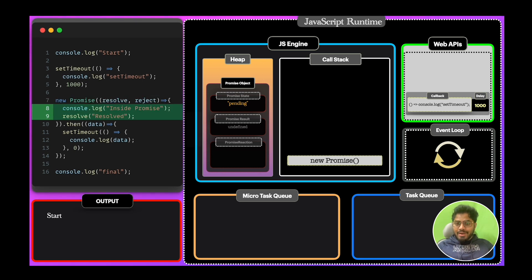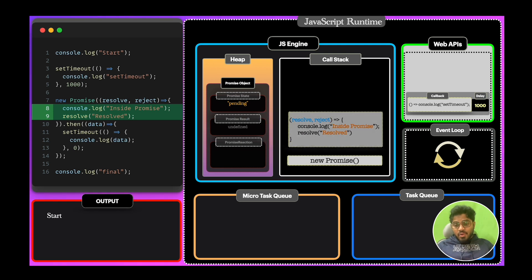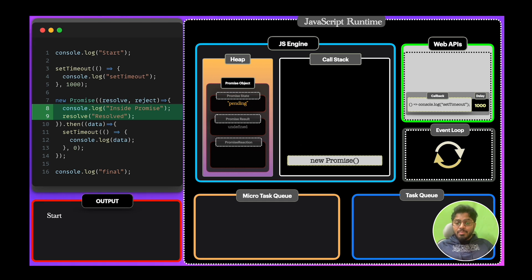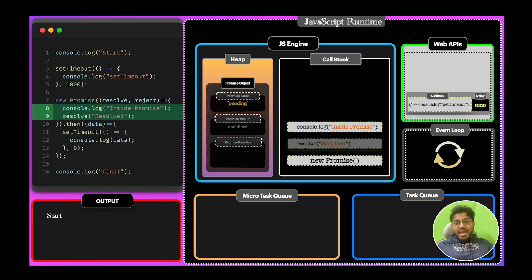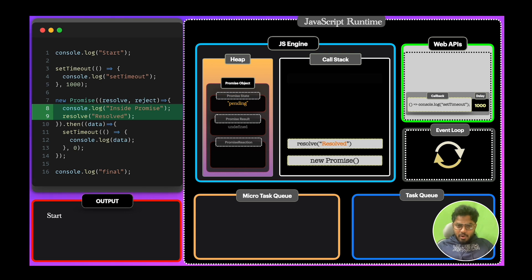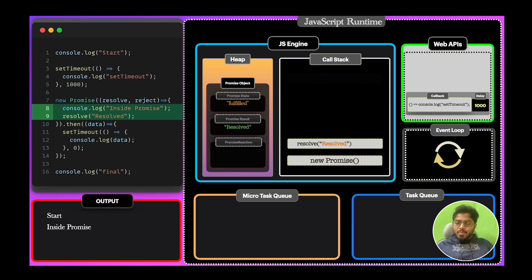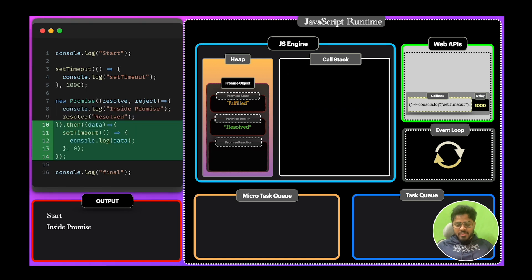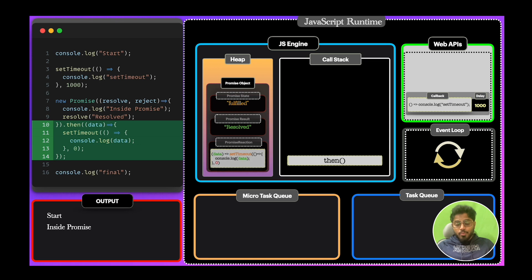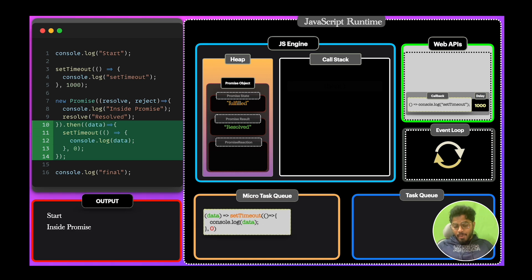Our pointer goes to the next line where a promise callback is present with resolve and reject as params. This callback is pushed to the call stack and executes line by line. The inside promise executes and is resolved — it gets logged first, then our promise is resolved. After resolving, the promise state becomes fulfilled and the promise result is 'resolved'. Our pointer then goes to the then block, which is a promise reaction. Since our promise is already resolved, this promise reaction is pushed into the microtask queue.